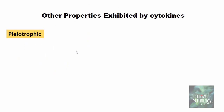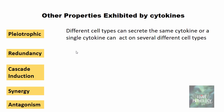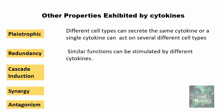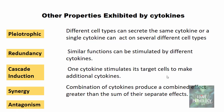Other properties exhibited by cytokines are: pleiotrophic — meaning different cell types can secrete the same cytokine and a single cytokine can act on several different cell types; redundancy — when different cytokines bring about similar functions; cascade induction — one cytokine stimulating its target cells to produce additional cytokines; synergy — where the combination of cytokines produces an effect much greater than the sum of their separate effects; and antagonism — where two cytokines on a particular cell have opposite actions.